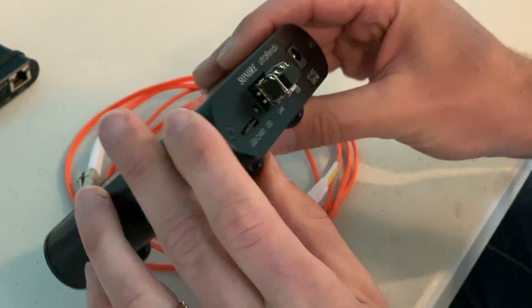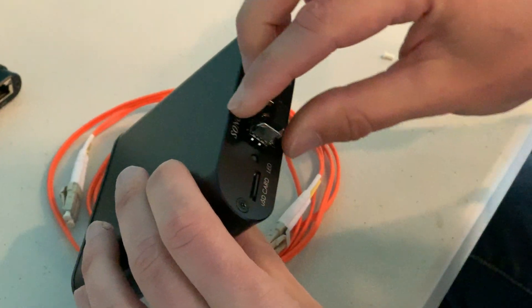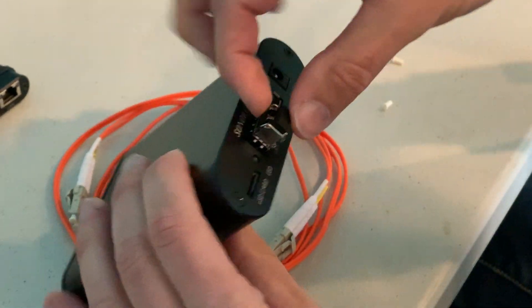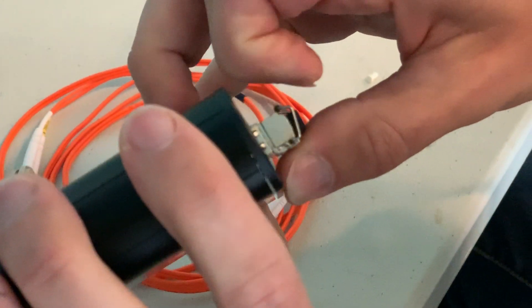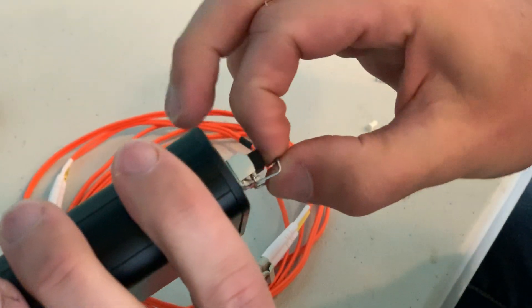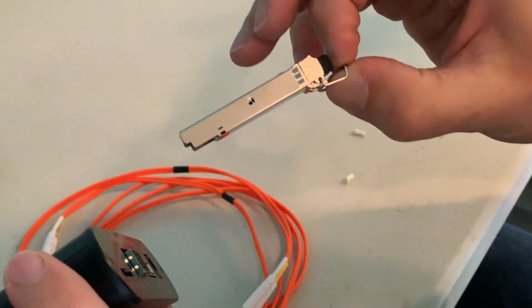The way you eject this thing: pull this little handle down here and it actually creates a little thing, and you can just pop this right out of here.